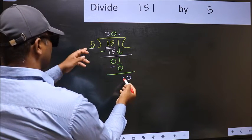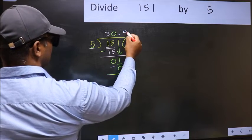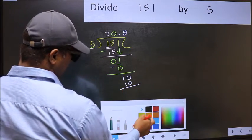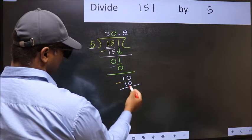So, 10. When do we get 10 in 5 table? 5 times 2 is 10. Now you should subtract. 10 minus 10, 0.